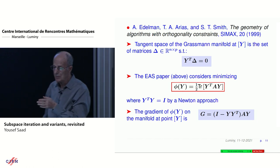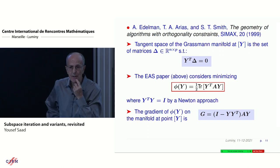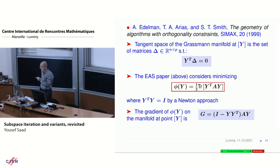I'm going to summarize what was done in 1999 by Arias, Edelman, and Smith. This is a very well-known paper with a lot of things in it. What I'm talking about here is specifically the ideas that deal with maximizing the trace. The tangent space of the Grassmann manifold at Y is the set of matrices delta, same shape, same dimension, that Y transpose delta equals zero.